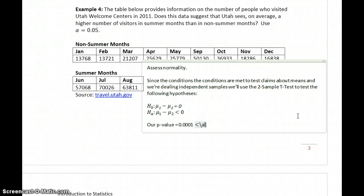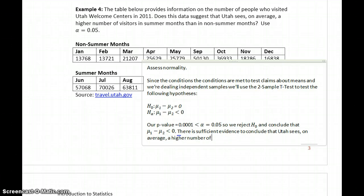Which in this case is less than our value for alpha, which was 0.05. So we reject the null hypothesis, and conclude that mu1 minus mu2 is less than 0. So there is sufficient evidence to conclude that Utah sees, on average, a higher number of visitors in summer months. Since what we're saying is mu1 minus mu2 is less than 0, so mu1, which is our non-summer months, is less than our summer months. So there's enough evidence to come to that conclusion.